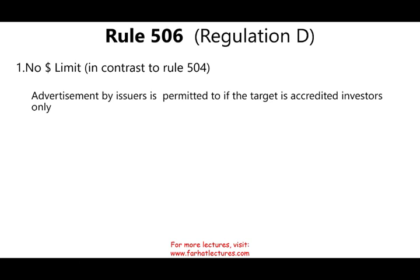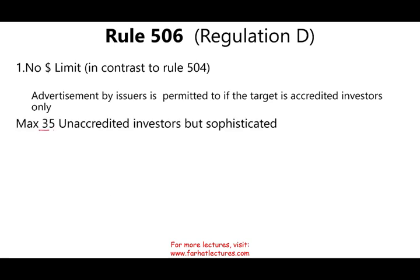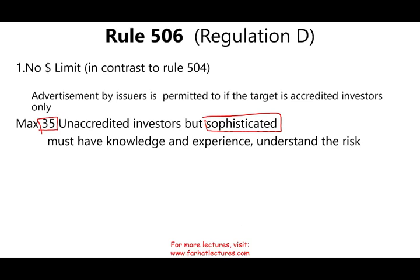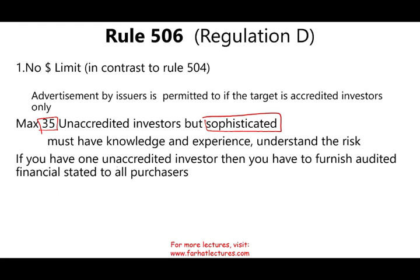Can you have unaccredited investors under Rule 506? Yes. You can have up to 35 unaccredited investors, but those unaccredited investors must be sophisticated — meaning they have knowledge and experience and understand the risks they're taking on. However, if you have even one unaccredited investor, you must furnish all the financial statements to everyone. So if you're going under Rule 506 and trying to avoid that burden, you simply don't sell to any unaccredited investor.